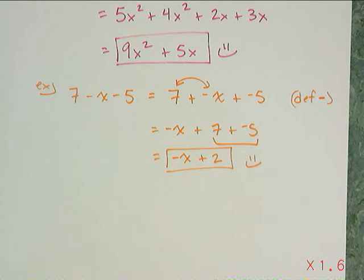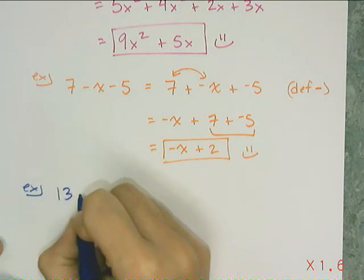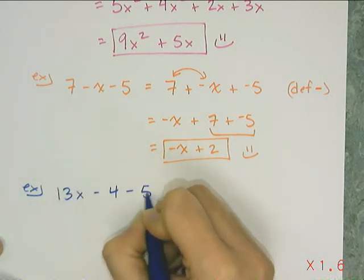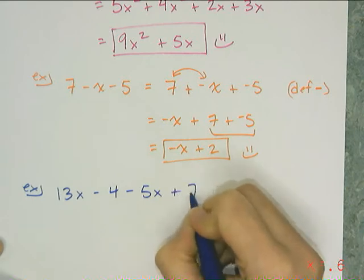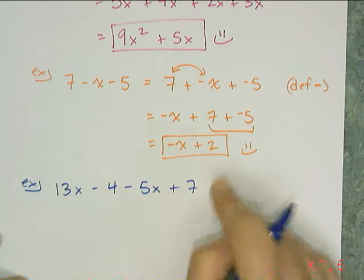So this next example is one you want to try on your own. So pause now. Well, not pause now. Wait until after I write the prompt down. Then pause because that would be silly. So I have 13x minus 4 minus 5x plus 7. Okay. So pause now.